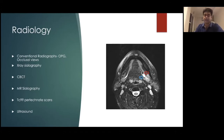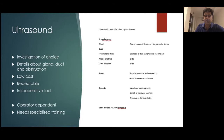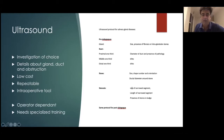Pertechnetate scans are basically for salivary function. The investigation we generally rely upon is the ultrasound, which gives excellent details about the gland, the duct, and the site of obstruction. It is relatively lower in cost, repeatable since it has no radiation, and is also a good intraoperative tool. The drawbacks are that it is operator-dependent and requires specialized training. This is the protocol that we follow at our institute, made about five years ago.